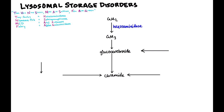There's another way we get to glucocerebroside: from ceramide trihexoside. The enzyme that does this is called alpha-galactosidase A. So that also converges on glucocerebroside.